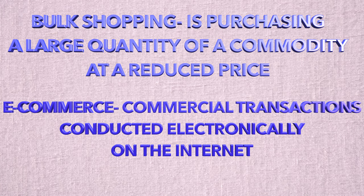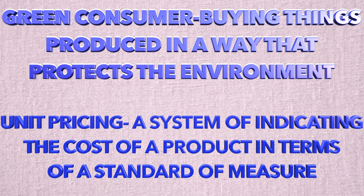Before we begin the lesson, let's start with related terms. Bulk shopping: to purchase something at a reduced price in a large quantity of a particular commodity. E-commerce: a commercial transaction conducted electronically on the internet. Green customer: a customer who purchases things that have been produced in a way that protects the environment. Unit pricing: a system of indicating the cost of a consumer product in terms of a standard measure.